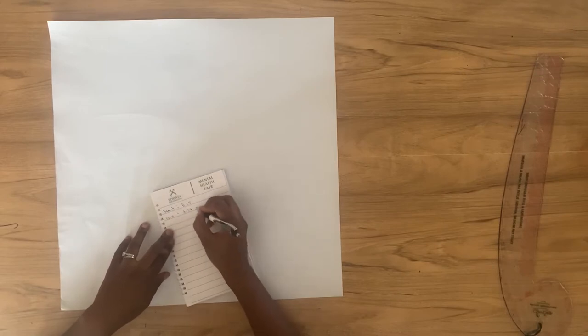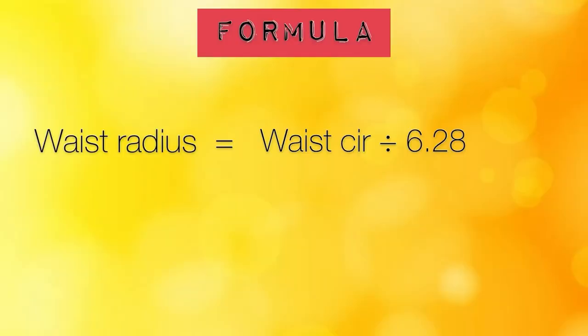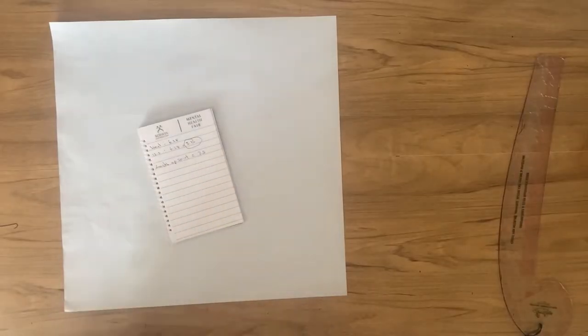The next thing is to determine the waist radius for a full circle skirt. The formula is: divide your waist circumference by 6.28. Note that this is when you're cutting on pattern paper. When cutting on fabric you need to add your seam allowance, which I'll demonstrate later. I'm working with 13.5 as my waist circumference, so dividing that by 6.28 gives me approximately 2.2.